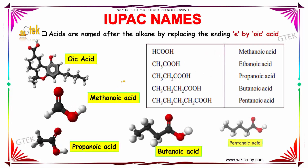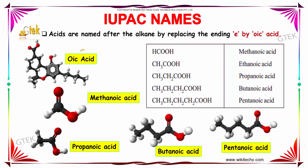Now let us study about the IUPAC naming. Acids are named after the alkane by replacing the '-e' with '-oic acid'. For example, HCOOH is nothing but methanoic acid, which is derived from methane. Similarly, CH₃COOH is nothing but ethanoic acid, whereas CH₃CH₂COOH is nothing but propanoic acid. The pattern continues for butanoic acid and pentanoic acid.